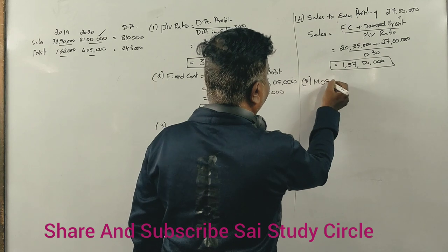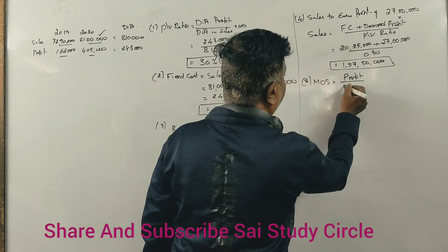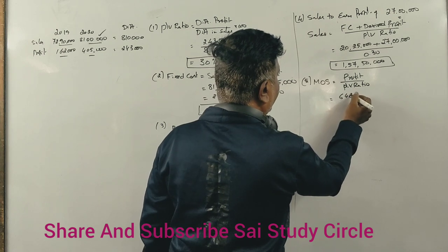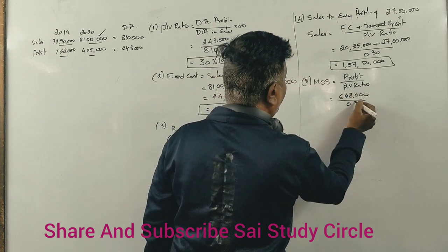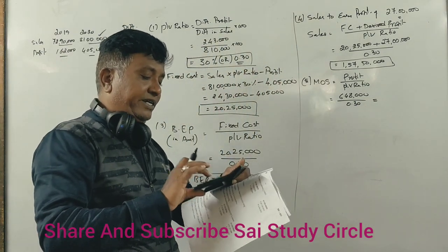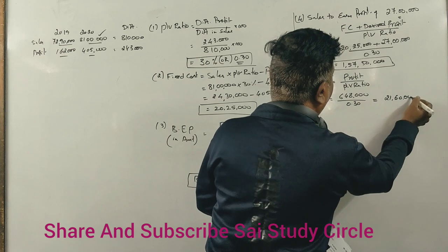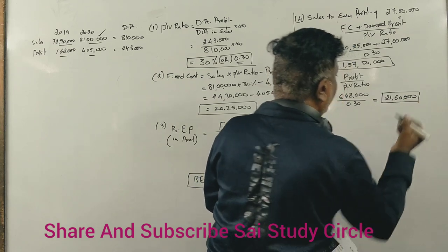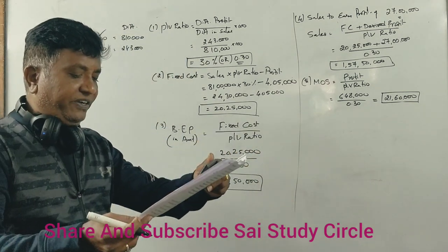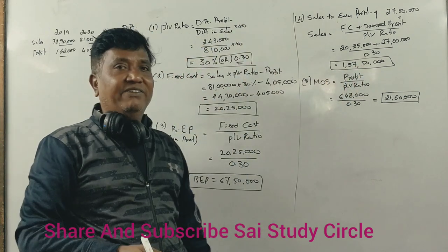For Margin of Safety at a profit of 6,48,000: the formula is Margin of Safety = Profit / PV Ratio. Profit is 6,48,000 and PV Ratio is 0.30, giving a Margin of Safety of 21,60,000 rupees.